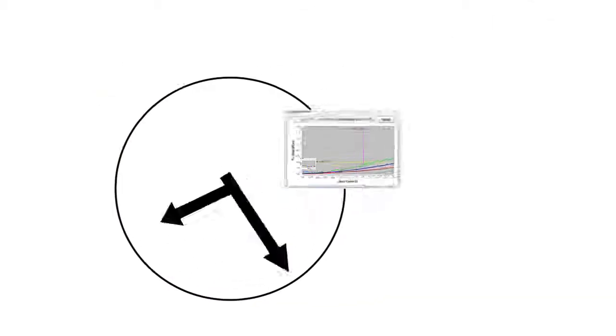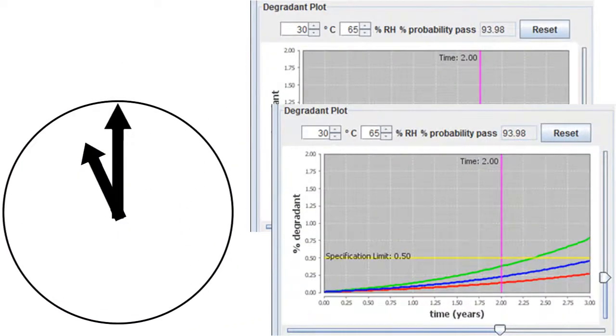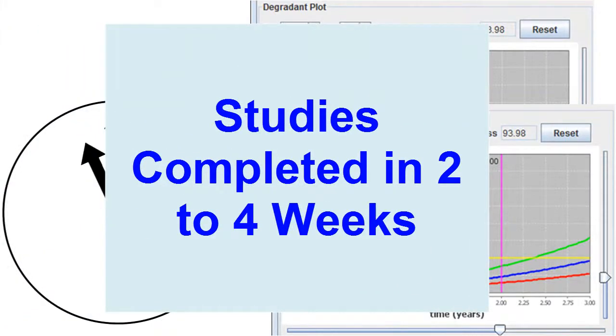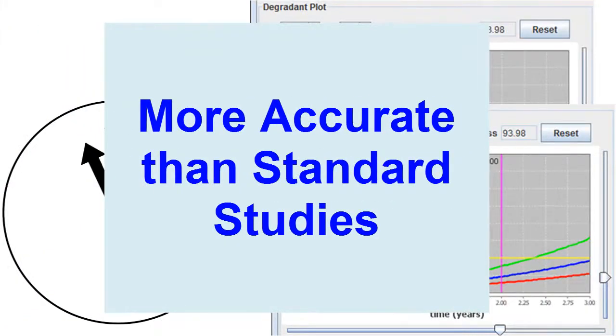ASAP Prime lab studies can be completed in just two to four weeks and predict shelf life and stability more accurately than the standard six-month studies.